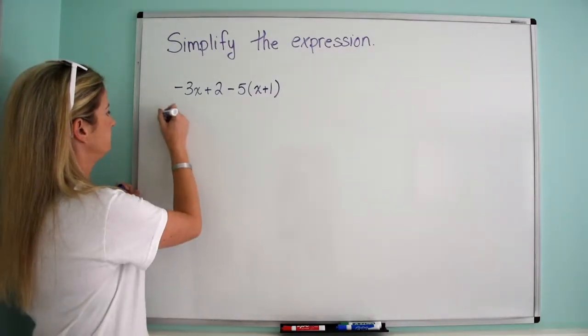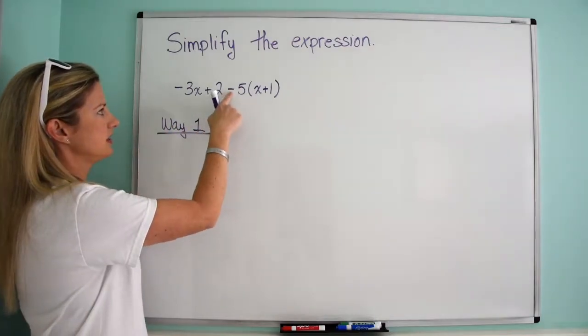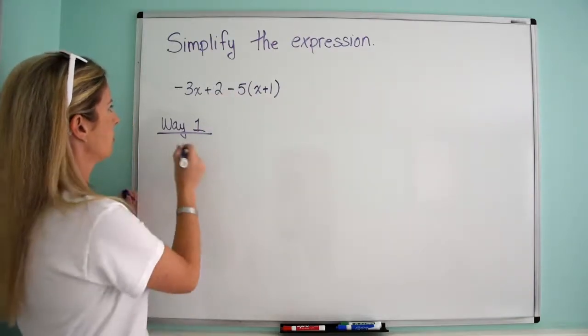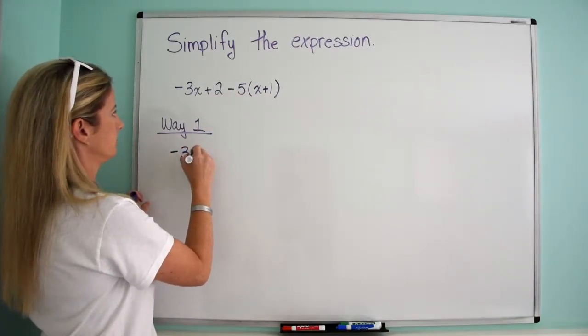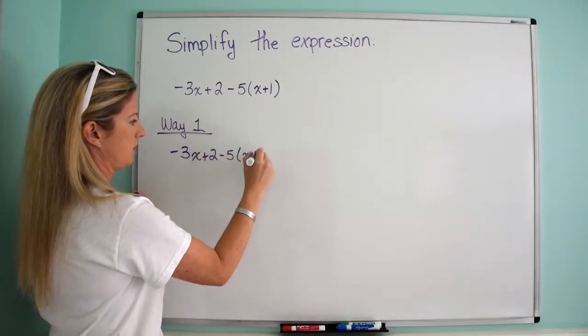All right, so way 1. And really, all this has to do with is what we do with the fact that it's minus here. So way 1, what we're going to do is I'll rewrite the original problem: negative 3x plus 2 minus 5 times the quantity x plus 1.